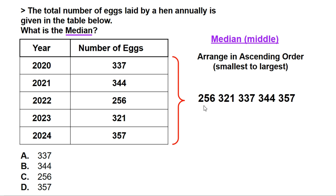Going from the smallest to the largest, we cancel out the two numbers on the outside, then the next two on the outside, and we remain with 337 as the median. The answer is A.